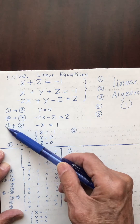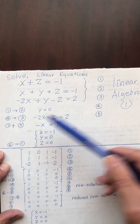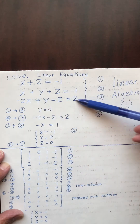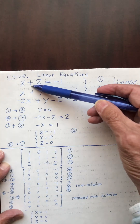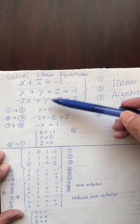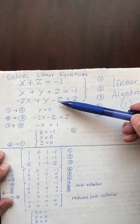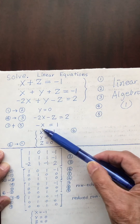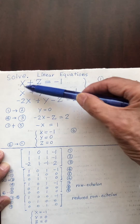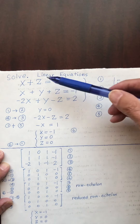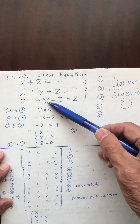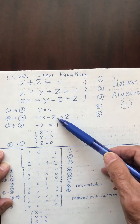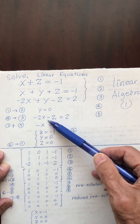Now I add equation one and equation five. In equation one I have x plus z, and in equation five I have negative 2x minus z. So plus z and minus z cancel. I have negative x. Because y is zero, y is not here. So adding them gives negative x equals two.